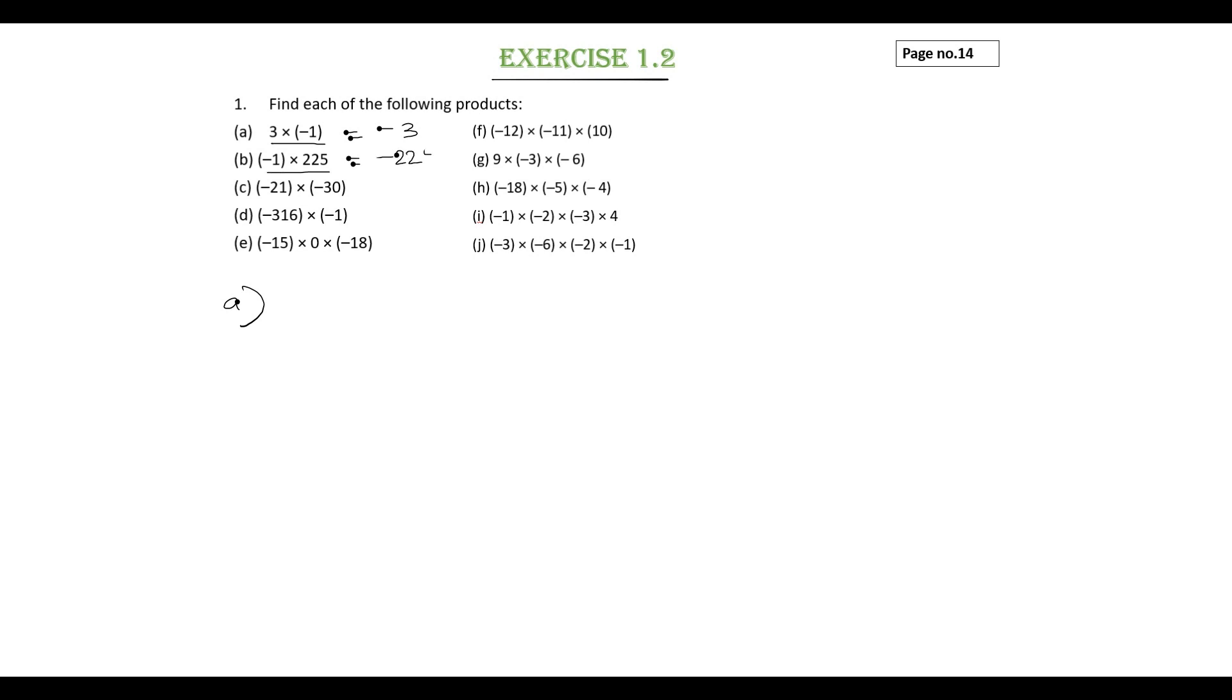Minus 1 into 225 will be minus 225. Problem C is minus 21 into minus 30. So you have 2 numbers with negative sign, which is same. So 21 into 30 is 630.